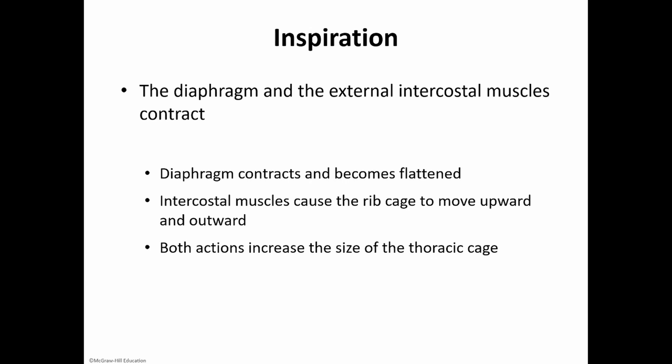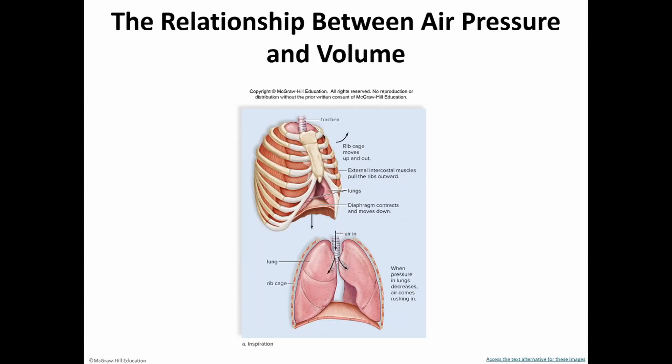In addition to Boyle's Law, we also have to look at some of these structures that are helping with this process. When we're looking at inspiration, the diaphragm and the external intercostal muscles — muscles you find between the ribs — they're both going to contract. When the diaphragm contracts, it's going to flatten out and move down. The intercostal muscles are going to pull on that ribcage, moving it up and out, and so both of these actions are going to increase the volume in the thoracic area in the chest. We see that diaphragm move down from a nice curved C shape, it flattens out and moves down. As it does that, more space will be available. These ribs move up and out, again more space all around, so the pressure inside the lungs is going to decrease and air will rush inside.